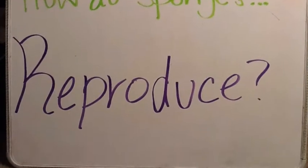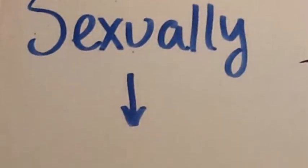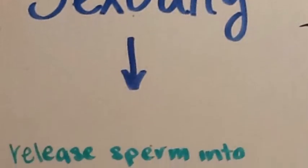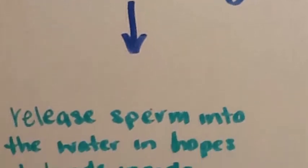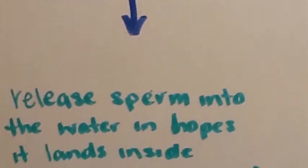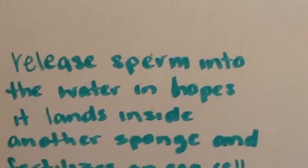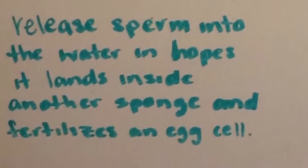How do sponges reproduce? Sponges reproduce sexually and asexually. These are both very long, so I will let you read them on your own.